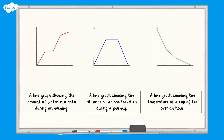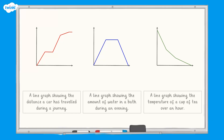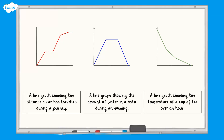These line graphs have all the key information missing. Can you use the shapes of the graphs to match each one to its title? The distance the car travelled would have increased throughout the journey, so this was shown by the red graph. The water in the bath increased until it was full, stayed the same when it was being used, and then decreased again when the plug was pulled out — this is shown by the blue graph. The temperature of a cup of tea would decrease over time, so this is shown by the green graph.